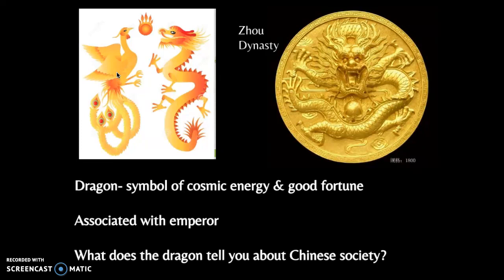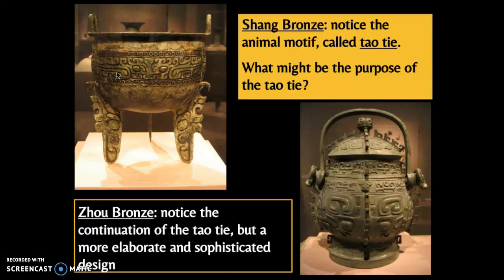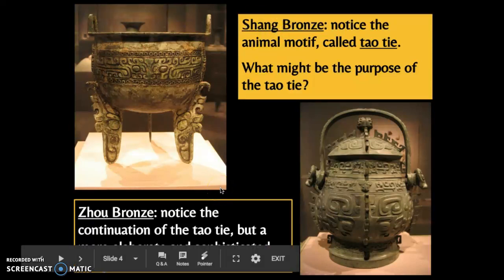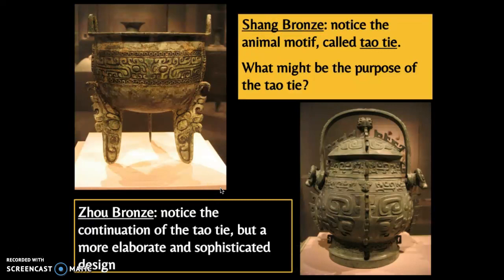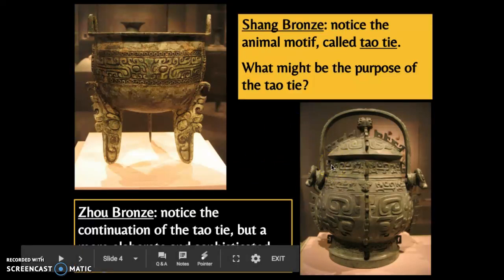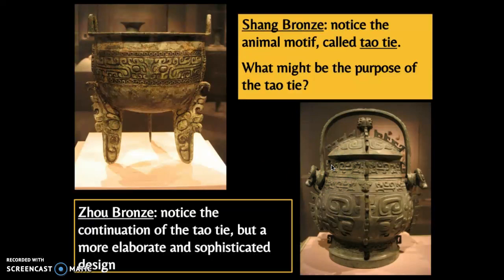With our earliest dynasties — the Shang and the Zhou — we started to see their use of bronze vessels. These vessels would have been used in ritualistic ceremonies. Remember the earliest religion would have been animistic, seeing the spirits in nature, and these were used in rituals to maybe placate nature or to communicate with the ancestors, so the ancestors could intervene on their behalf or speak to the gods for help.